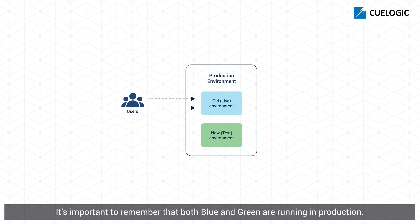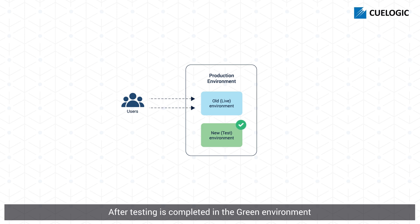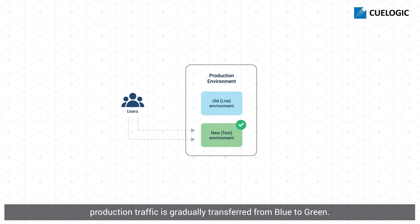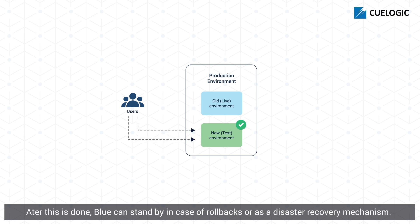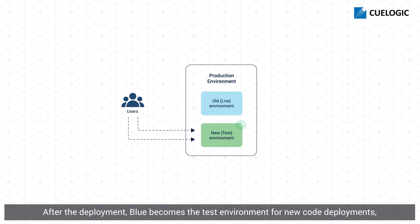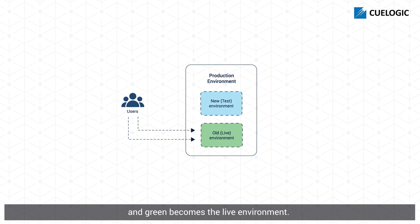It's important to remember that both blue and green are running in production. After testing is completed in the green environment, production traffic is gradually transferred from blue to green. After this is done, blue can stand by in case of rollbacks or as a disaster recovery mechanism. After the deployment, blue becomes the test environment for new code deployments, and green becomes the live environment.